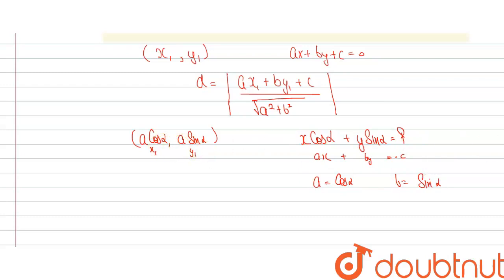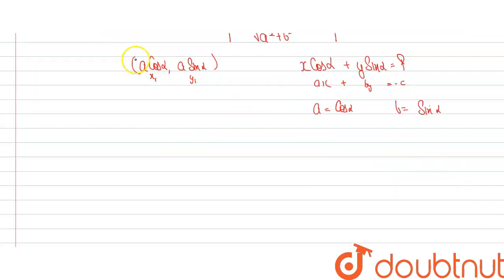And X1, Y1 is this point. So what we'll do is we'll put X1, Y1 in this equation. We'll get value of D will be equal to mod of A cos square alpha plus A sin square alpha minus P. As C is equal to minus P.